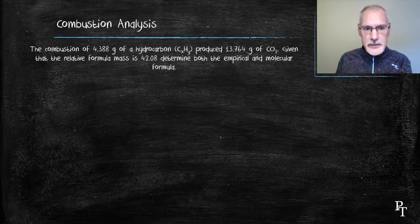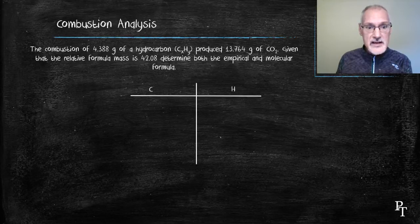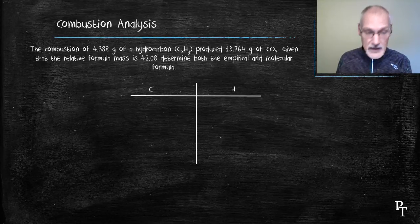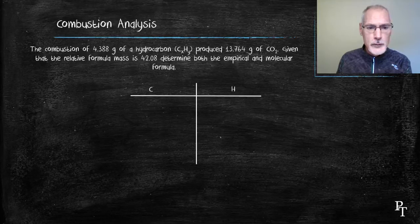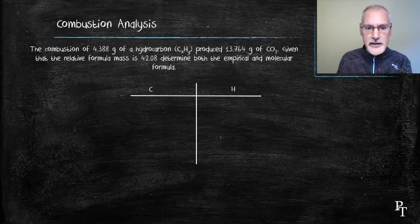Let's begin, as we do typically with most of these questions, by setting up a t-chart looking at each of the individual elements. At this point, I don't have the mass of either of the elements. I only have the total mass, 4.388 grams. I need to know how much of that is carbon, how much of that is hydrogen. To do that, I'm going to turn to the carbon dioxide.